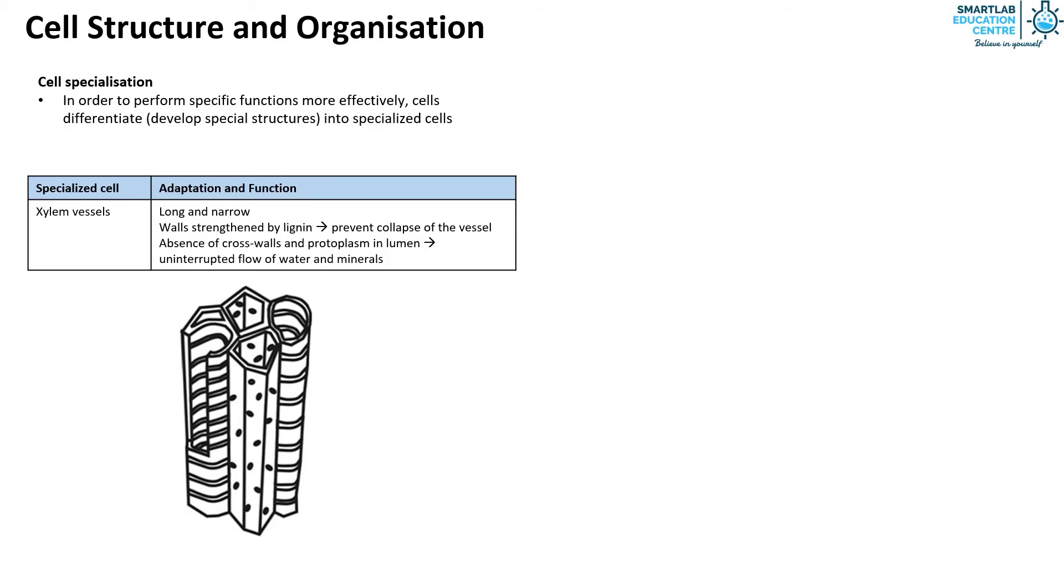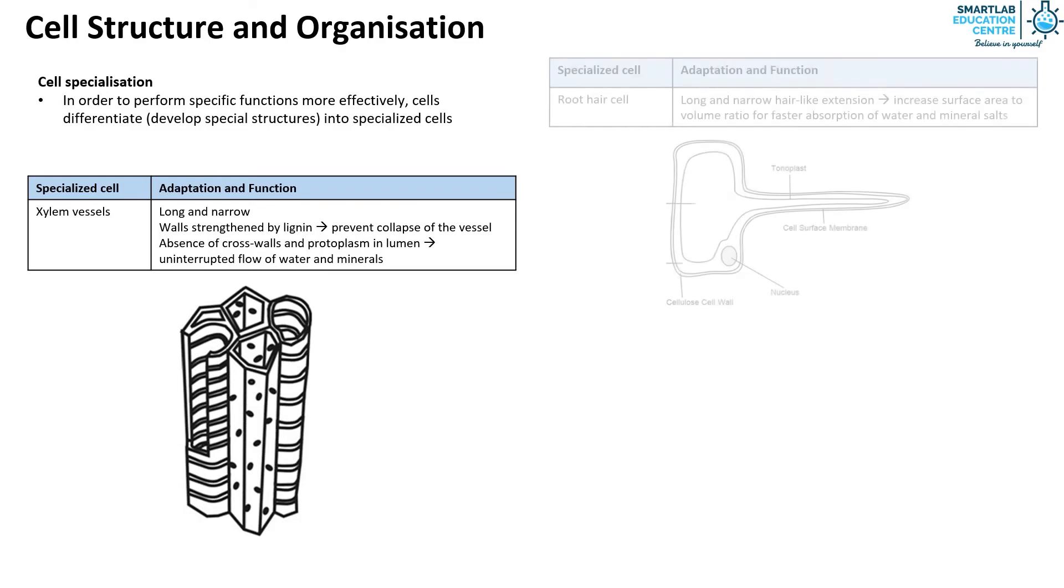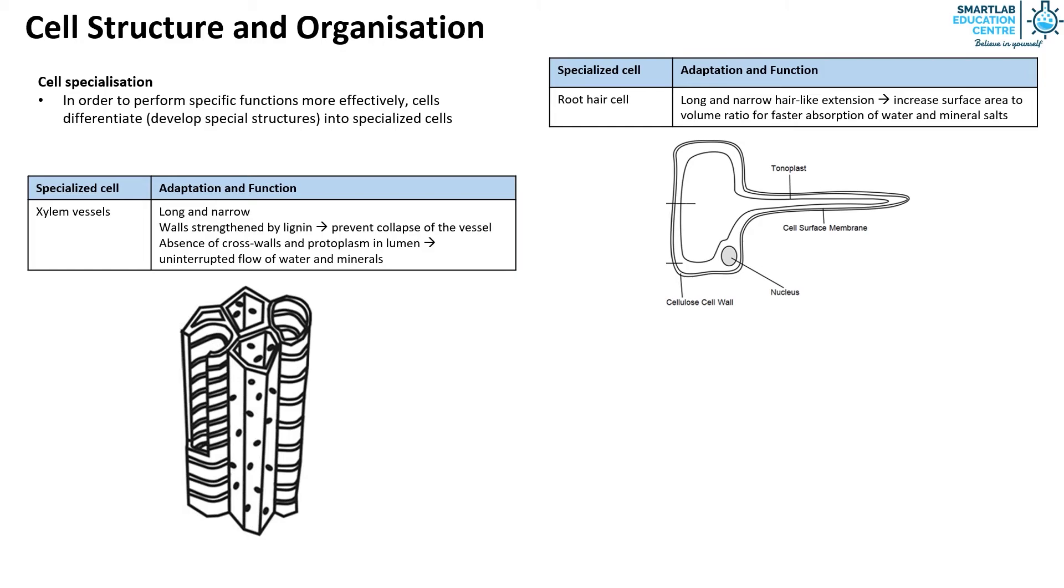The second specialized cell is the root hair cell. It is long and has a narrow hair-like extension which increases surface area to volume ratio for faster absorption of water and mineral salts.